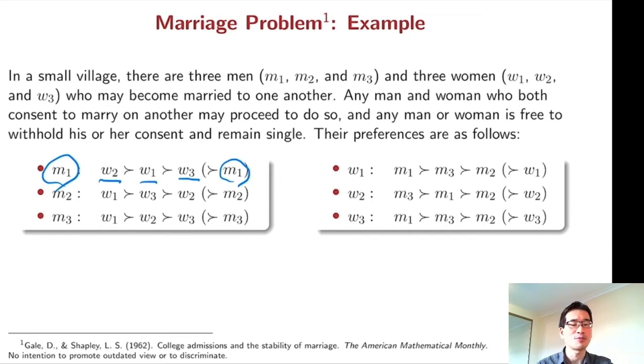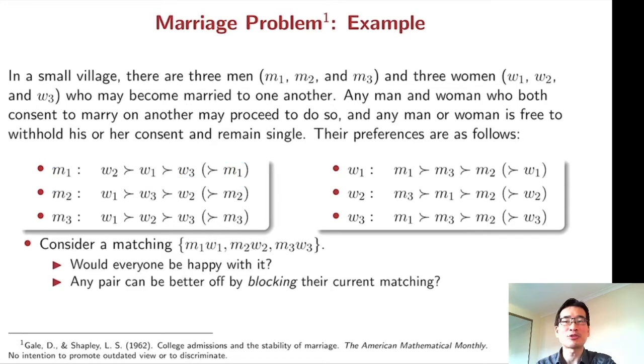Similarly, each woman has a preference over three men and herself. Let's consider a random matching in which M1 and W1 married to each other, and M2 W2 and M3 W3. Is everyone happy with this matching? The answer may be no.